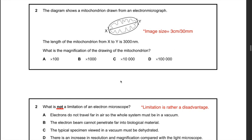Question 11: the diagram shows a mitochondrion drawn from an electron micrograph. The length from X to Y is 3000 nanometers. What is the magnification of the drawing? The image size is 3 centimeters. Convert to nanometers: 3 cm = 3 × 10⁷ nanometers. Using magnification = image size ÷ actual size: 3 × 10⁷ ÷ 3000 = 10,000. The magnification is 10,000. Hence the answer is C.